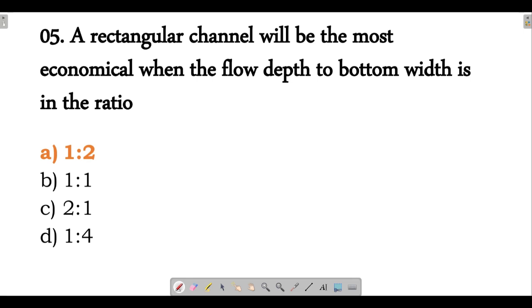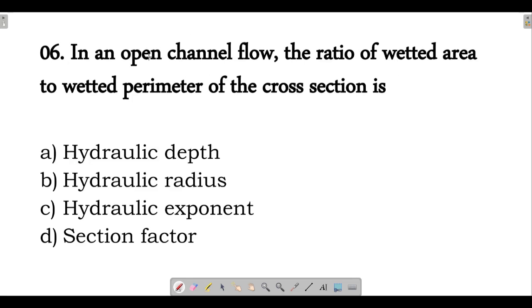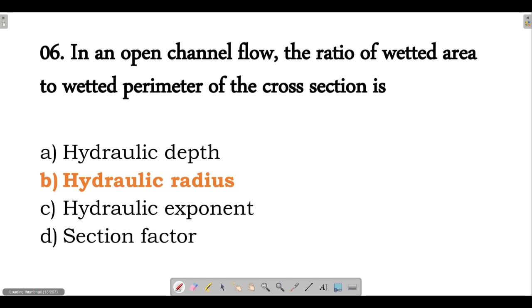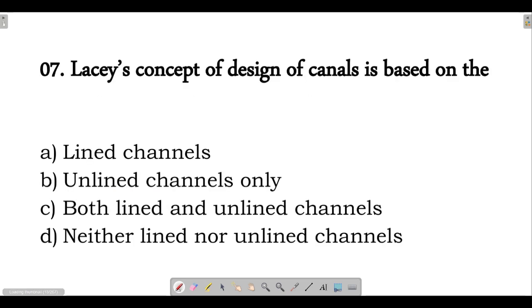Next question: in an open channel flow, the ratio of wetted area to wetted perimeter of the cross section is called the hydraulic radius.